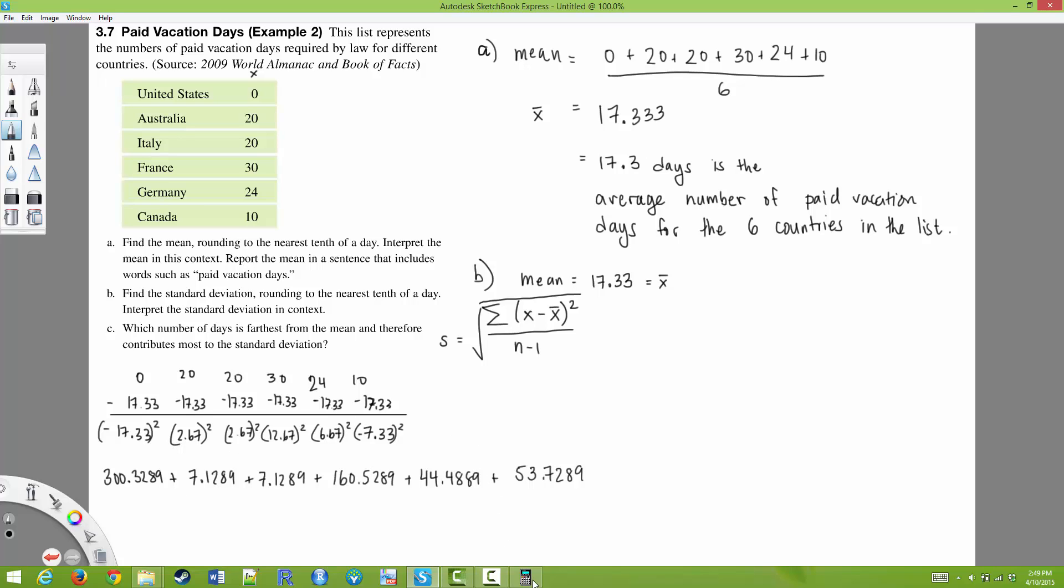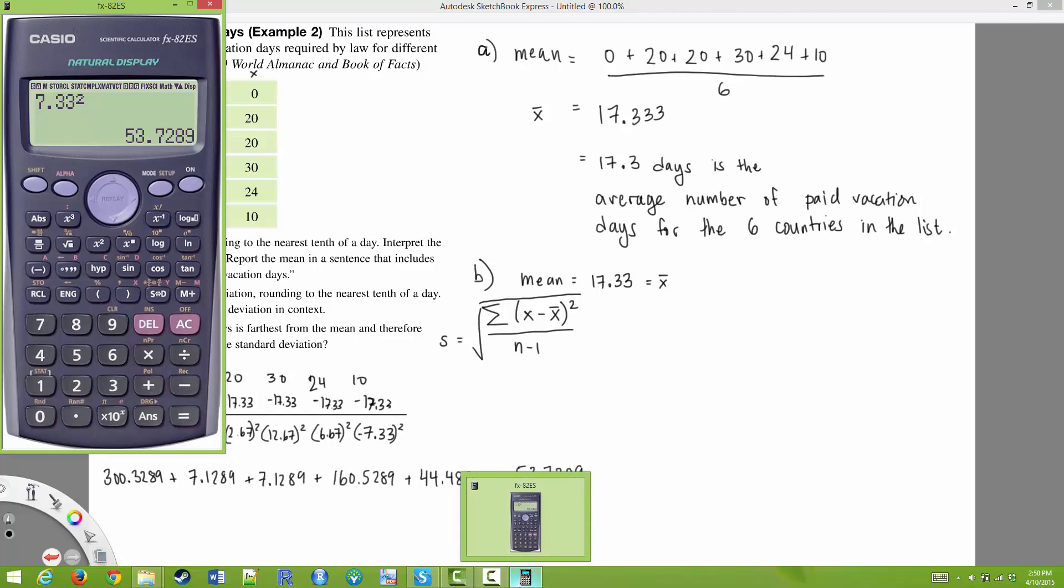Notice that all of these numbers, because we've squared them, are now positive. So any negative numbers, when you square them, become positive. So we are going to add all of these numbers together. 300.3289 plus 7.1289 plus 7.1289 plus 160.5289 plus 44.4889 plus 53.7289. That gives me a grand total of 573.3334.